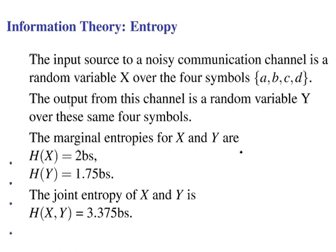We have a noisy communication channel, which is a random variable X with four symbols: a, b, c, and d. The output from this channel is a random variable Y over the same four symbols. The marginal entropies for X and Y are H(X) = 2 bits and H(Y) = 1.75 bits. In another video, we've seen that the joint entropy of X and Y is H(X,Y) = 3.375 bits.